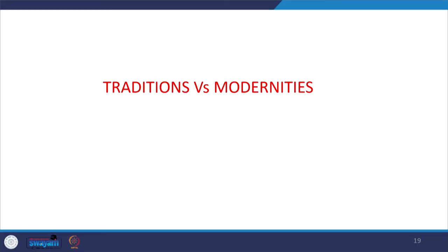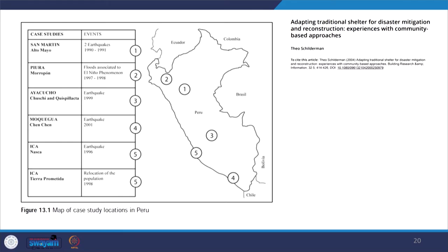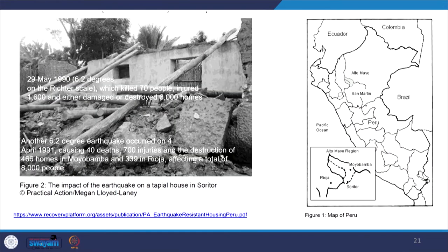Now we are going to talk about how traditional elements respond within modern setups. I will discuss two different contexts: Peru and Uttarakhand. In Theo Schilderman's work on adapting traditional shelter for disaster mitigation and reconstruction with community-based approaches, one particular case concerns the Alto Mayo region, where a series of earthquakes in 1990 and 1991 impacted the area. Many injuries and deaths were reported, and about 6,000 homes were destroyed or damaged.